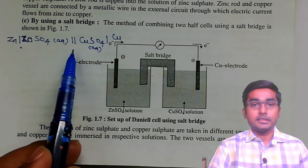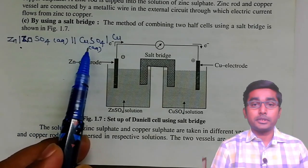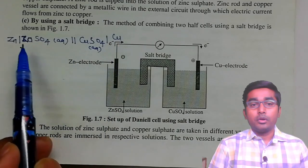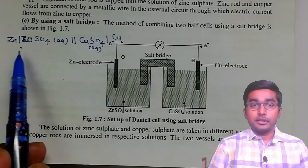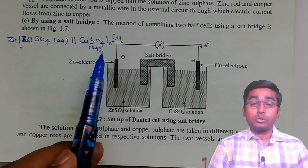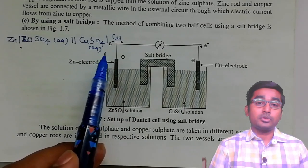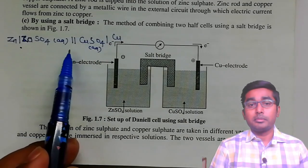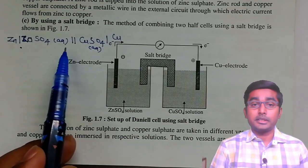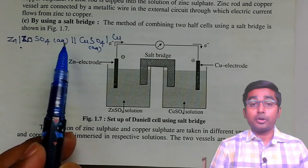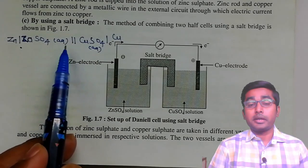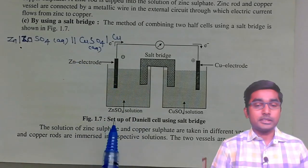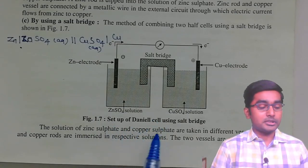Then these two vertical lines, again copper sulfate solution with 'aqueous' in bracket, single vertical line, and copper. The left side electrode and the right side electrode — what do they represent? Whether it is the oxidation electrode or the reduction electrode. What does the single vertical line represent? What does the double vertical line represent? What do the numbers or words written in brackets show? We are going to see all of this in today's lecture.